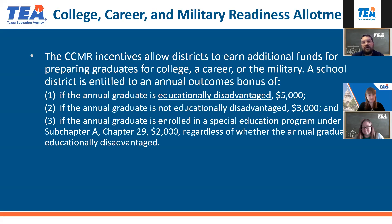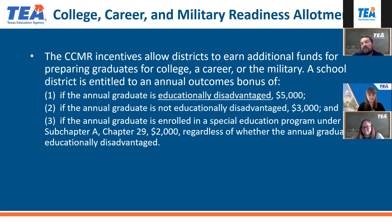The College, Career, and Military Readiness Allotment allows a district to earn additional funds for preparing graduates for college, a career, or the military. A district can earn an annual outcomes bonus if the annual graduate is educationally disadvantaged, pointing back again to the economically disadvantaged status of that student. This program also relies on that economic status information.